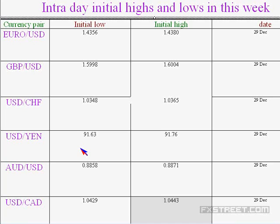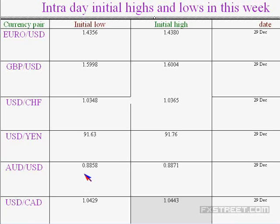For USD/CHF, 1.0348 is the low and 1.0365 is the high — both are intact. They could reach the high and go above it; currently the market is staying near the middle level of 1.0357. For USD/JPY, 91.63 is the low and 91.76 is the high — both are intact. You could see USD/JPY cutting the high and going up a little before coming down again when Euro and GBP are making the slide, as indicated very clearly by the contrarian moves shown by USD/CAD and AUD/USD.